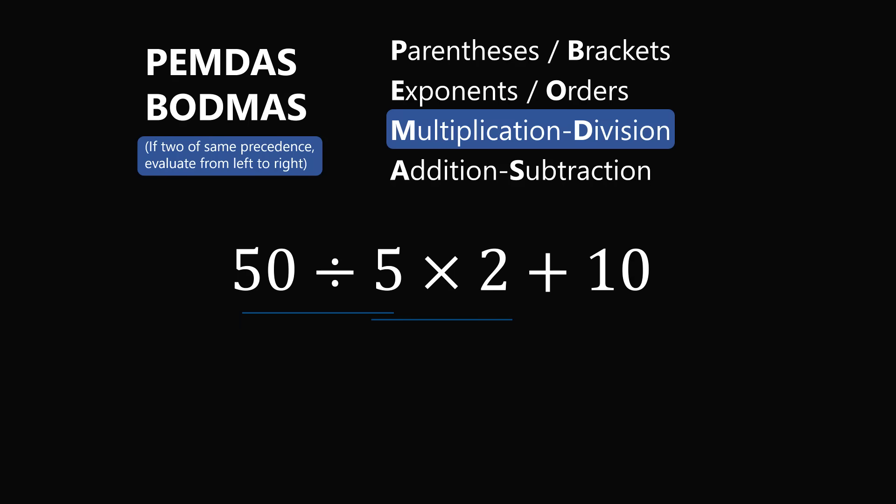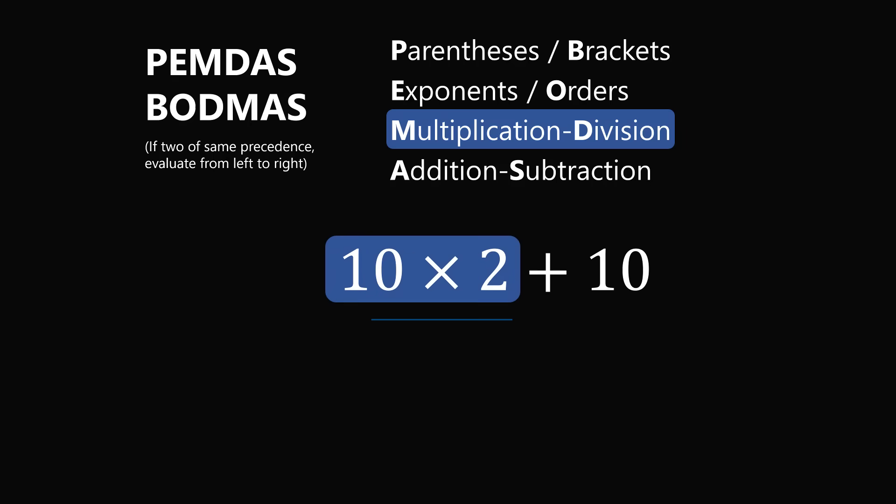So we should evaluate from the left. In this case, we will evaluate the division of 50 divided by 5 first. 50 divided by 5 is equal to 10. So let us substitute that into the expression. We now evaluate the multiplication, 10 times 2. That is equal to 20. So we substitute that in.